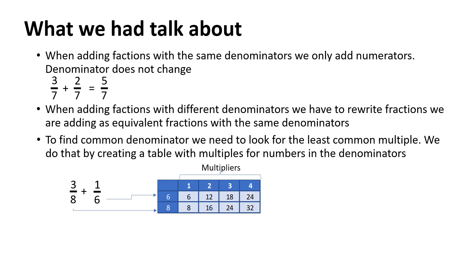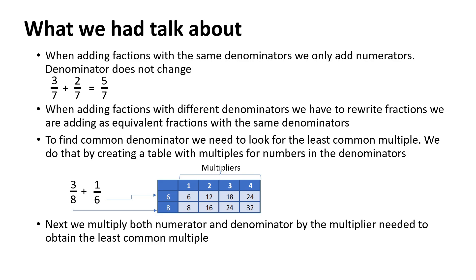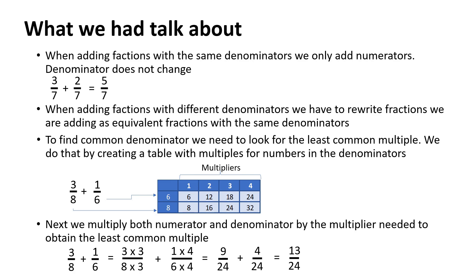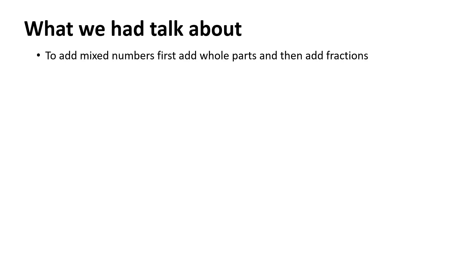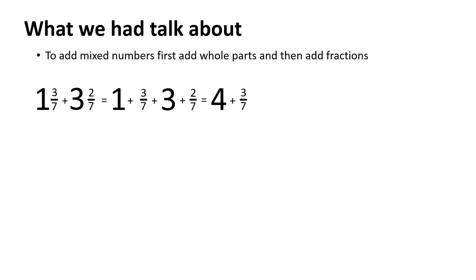We multiply both numerator and denominator by the multiplier needed to obtain the least common multiple. So we multiply numerator and denominator of the first fraction by 3, and numerator and denominator of the second fraction by 4. That gives us 9 twenty-fourths plus 4 twenty-fourths, which equals 13 twenty-fourths. To add mixed numbers, first add the whole parts and then add the fractions. For example, to add 1 and 3 sevenths and 3 and 2 sevenths, first add 1 and 3 to get 4, and then add 3 sevenths and 2 sevenths to get 4 and 5 sevenths.